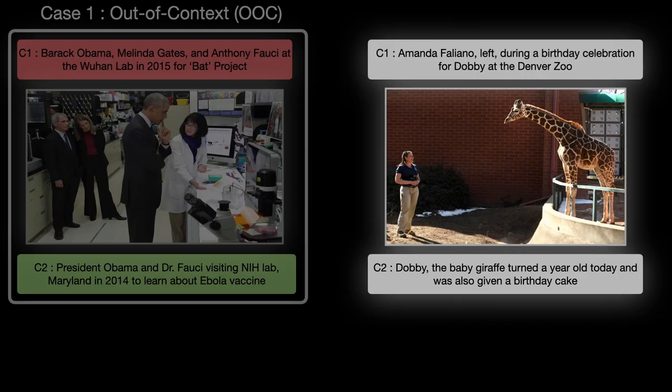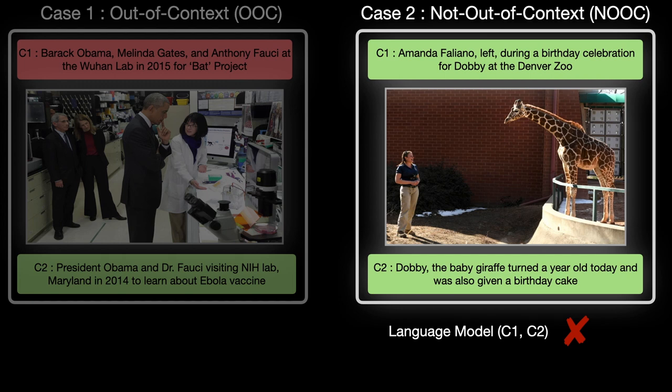In addition, certain images re-shared with different captions are not always misinformation. For instance, in the right image, the captions talk about different objects in the image, but they correspond to the same event. Thus, only using caption semantics to predict out-of-context use would give incorrect predictions.